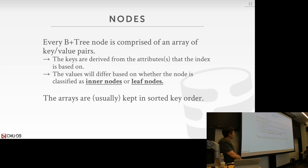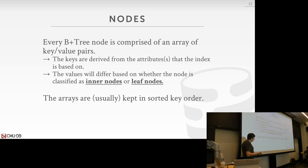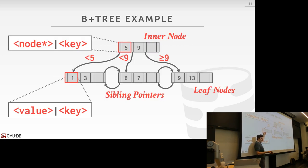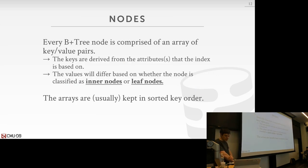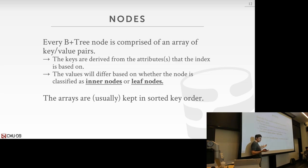In each node it's an array of key-value pairs. You use the keys to determine whether, if you're in a leaf node, it's the thing you want, or if you're in an inner node, whether you go left or right. In general, the keys in each node are always sorted in whatever order you want for that node. That allows us, when we jump into a node, to potentially do binary search to find what we're looking for rather than a linear search — though sometimes linear search is good too. The contents of the values in the leaf nodes can vary depending on the database system: it could be record IDs or the actual tuples themselves.